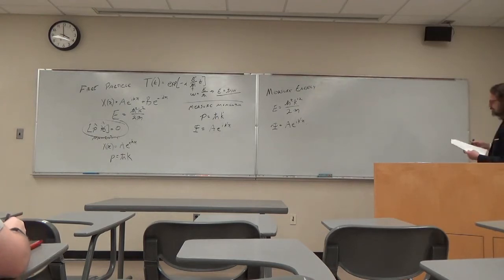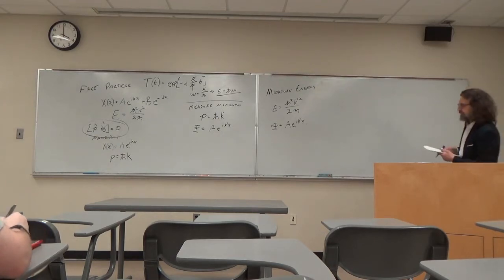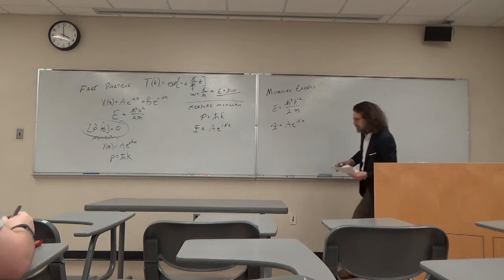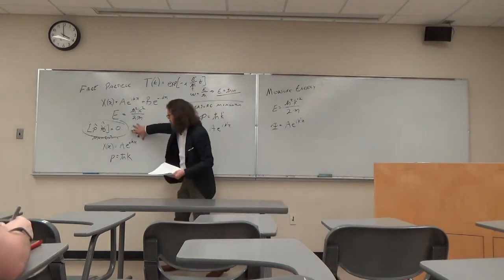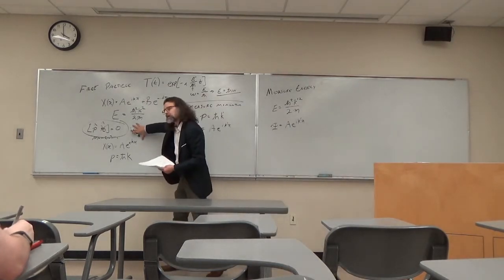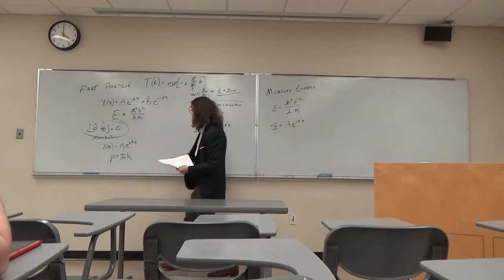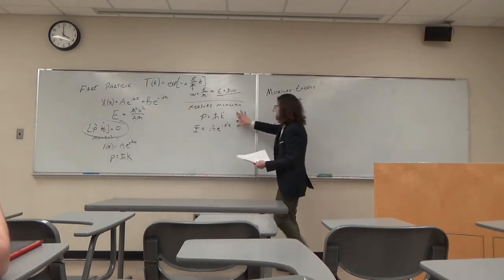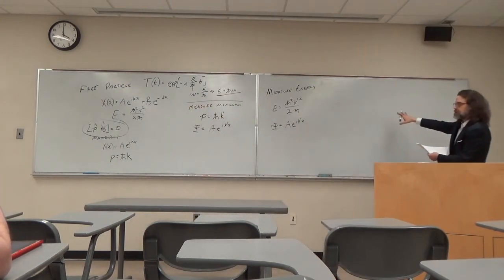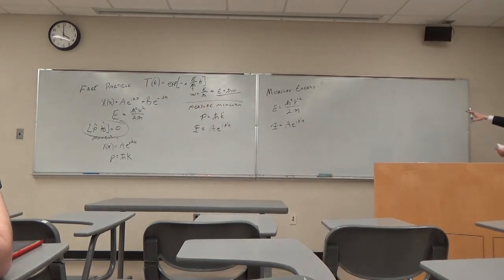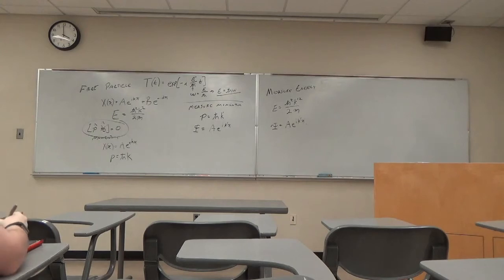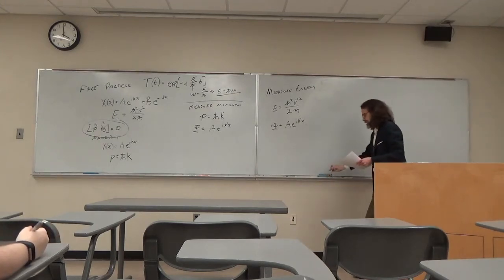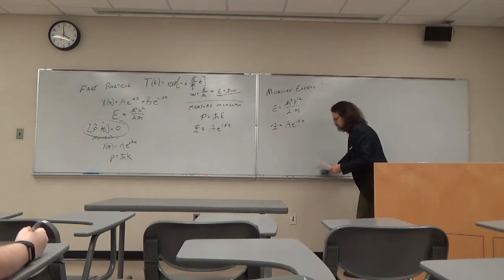You can see here that having a commutation relation equal to zero means that you can simultaneously know the energy and the momentum. So let's talk about velocity now.